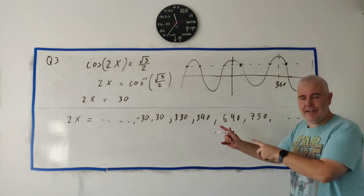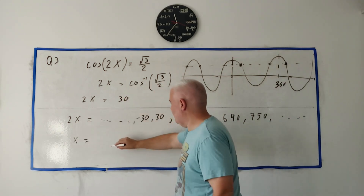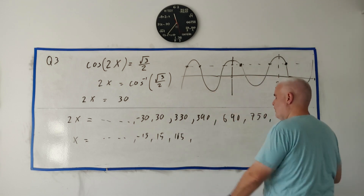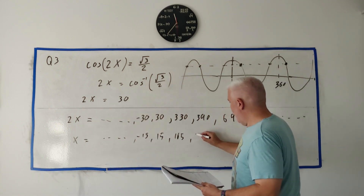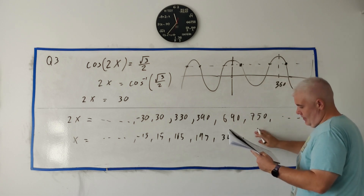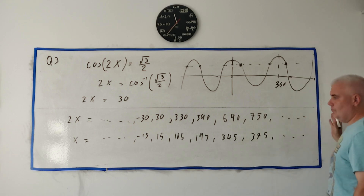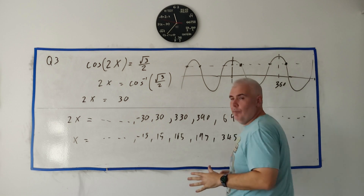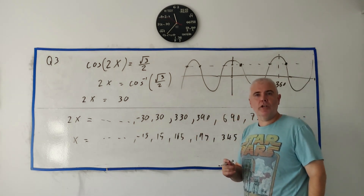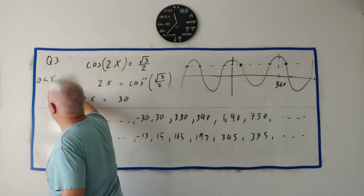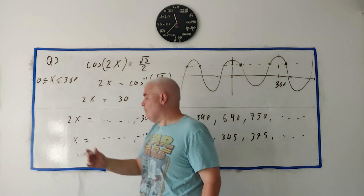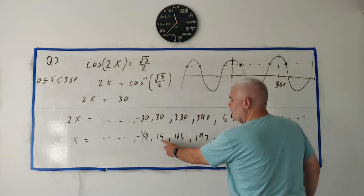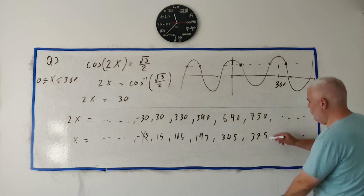This is all in terms of 2x, so x is just half of all of these values. Dividing by 2: x = −15, 15, 165, 195, 345, 375, and it keeps going. Now I apply what they told me at the start: x is between 0 and 360. I get rid of anything less than 0 or greater than 360. So −15 is out, 375 is too big — and anything further along. The values that remain are checked one by one.